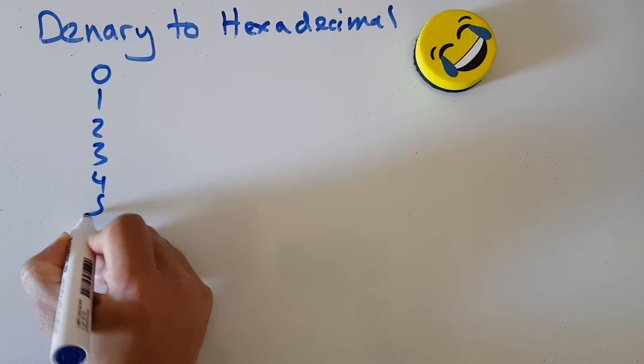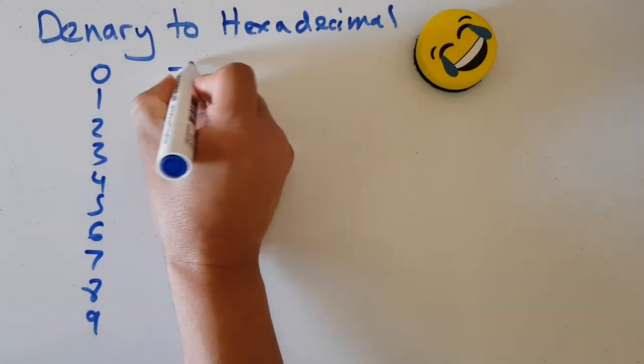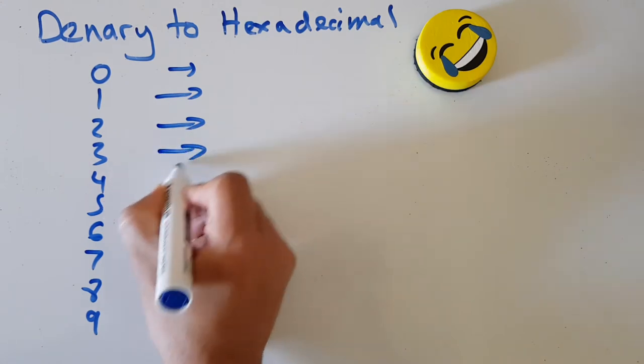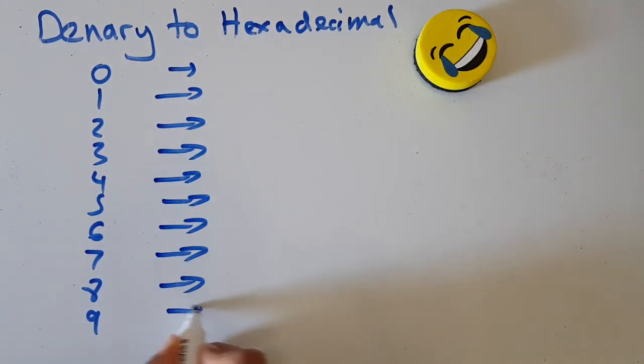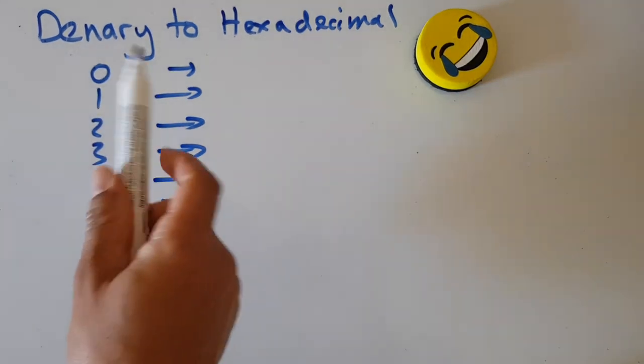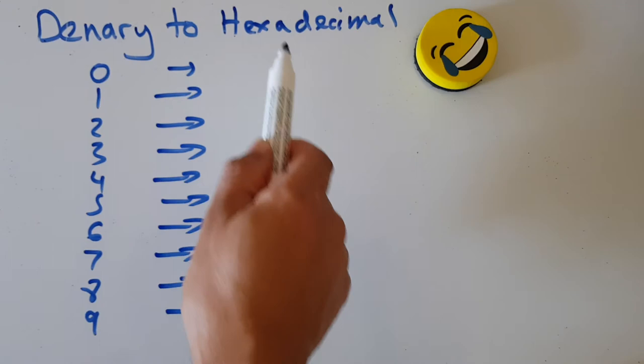...four, five, six, seven, eight. I've got to nine for now. We know these numbers because this is just our normal everyday denary counting. Now, what is denary zero in hexadecimal? The answer is it's the same: it's zero.